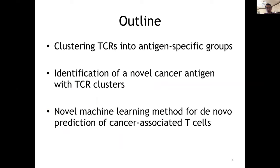We are interested in solving this problem from a different angle, motivated by the recent work by Mark Davis and Paul Thomas. We want to cluster TCRs into antigen-specific groups. With that, we actually identified a novel cancer-associated antigen — not a neo-antigen, as TCR clusters make it difficult to find novel neo-antigens, but we can find novel cancer-associated antigens. Finally, we want to convince the audience that the TCRs we find are indeed cancer-associated, and we can train a new machine learning method to identify the novel prediction of such T cells.